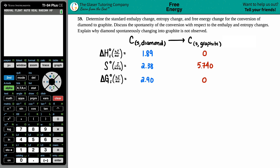Number 59: determine the standard enthalpy change, the entropy change, and the free energy change for the conversion of diamond to graphite. Then discuss the spontaneity of the conversion with respect to the enthalpy and entropy changes, and explain why diamond spontaneously changing into graphite is not observed.